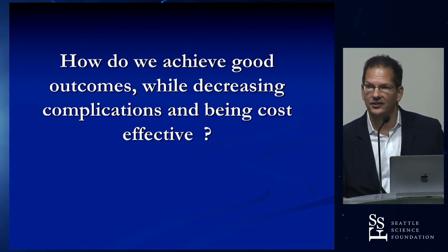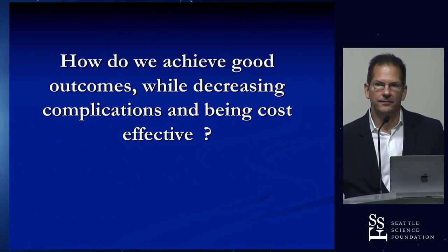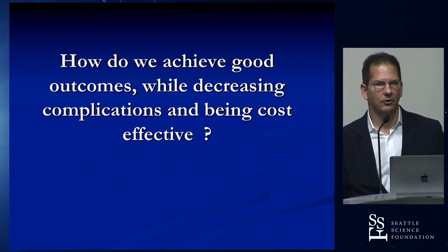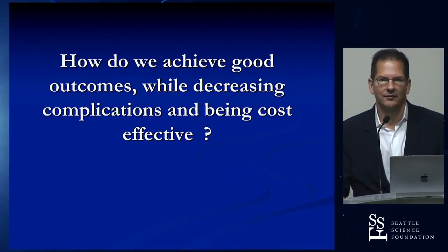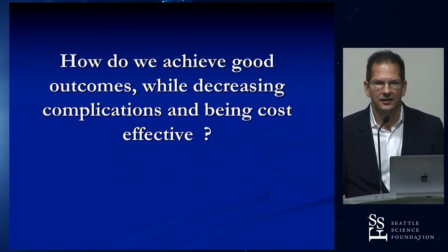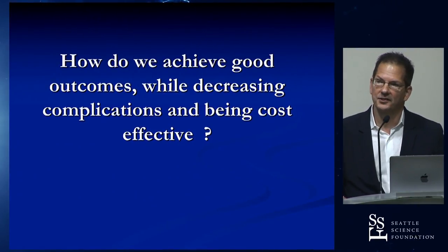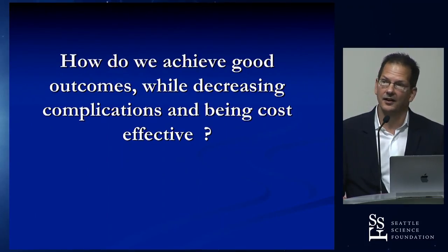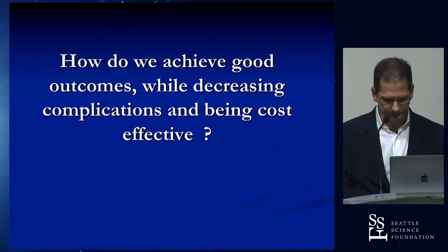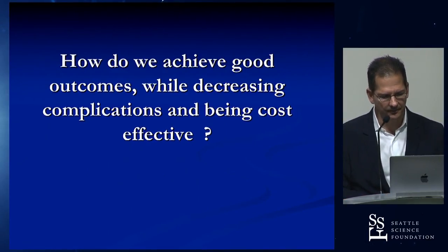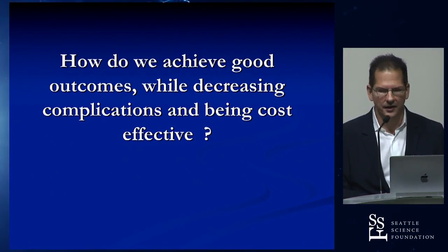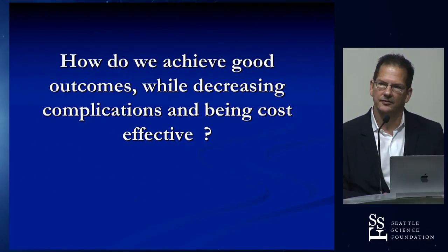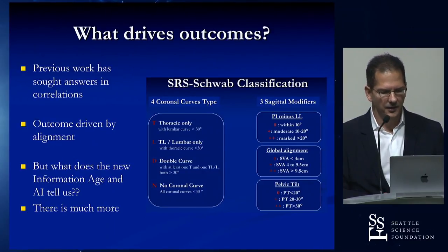The least frail patients — for example, the 45-year-old with a coronal curve they've had for 20 years and a low expected complication rate — are the ones who may struggle to have a good improvement in their ODI or SRS-22. So where can we go with this? How can we be informed in the new healthcare economy, in the age of informatics and AI?